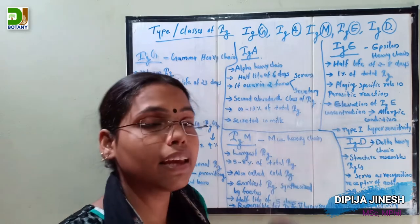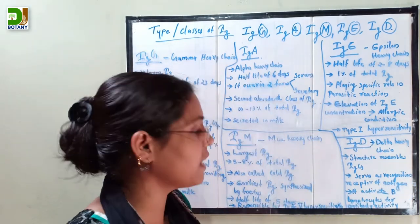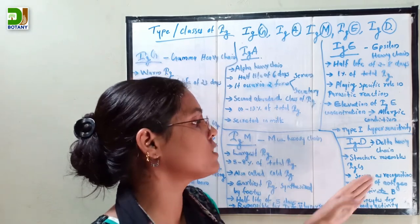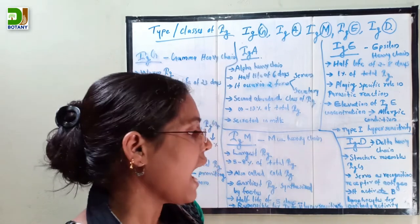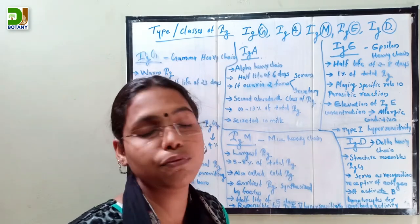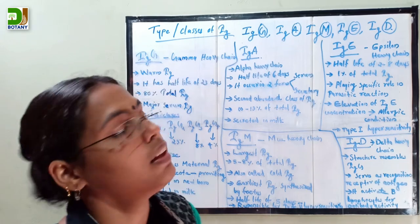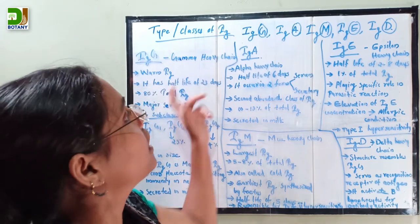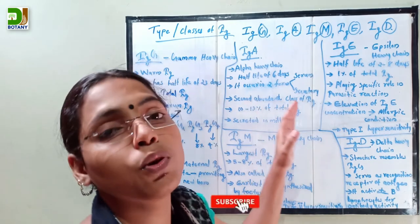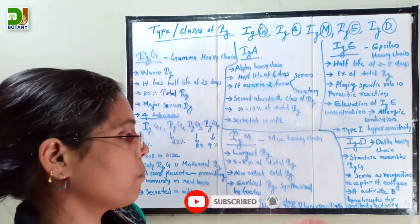The main function of immunoglobulin D is recognition of antigen receptors, and it activates B lymphocytes for antibody production or suppression. These are the five types of immunoglobulin present in human blood serum.